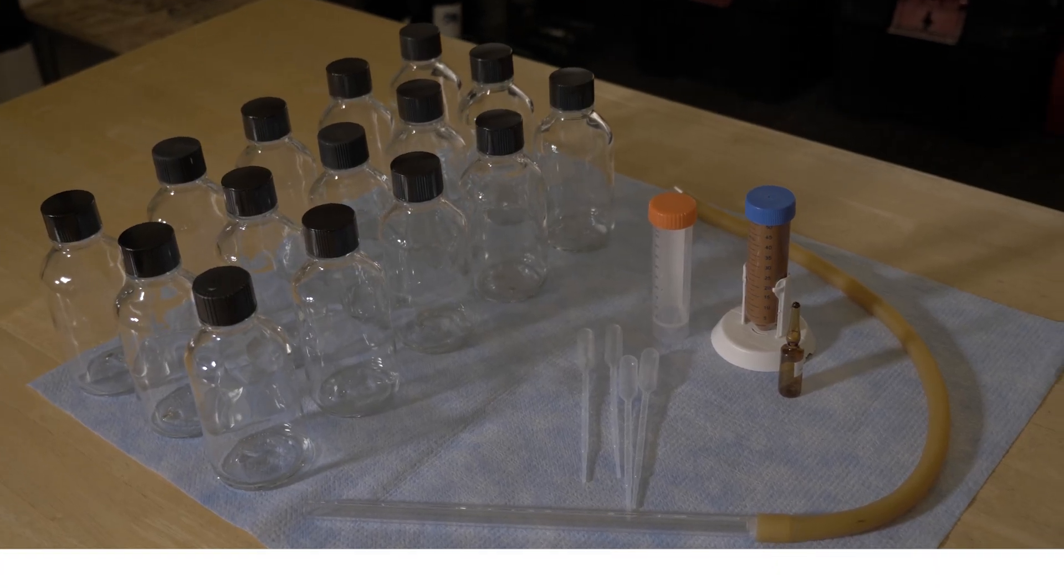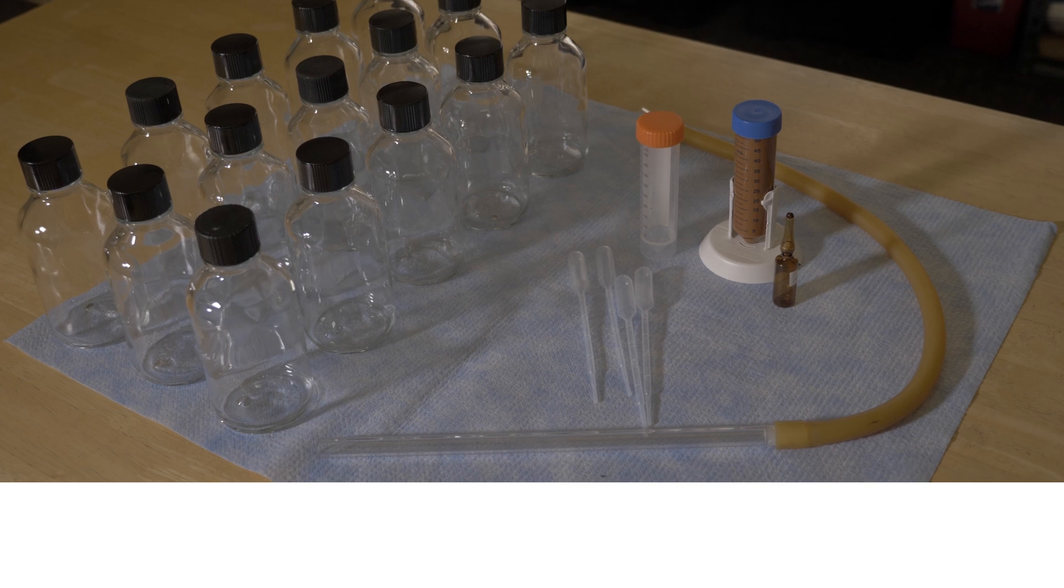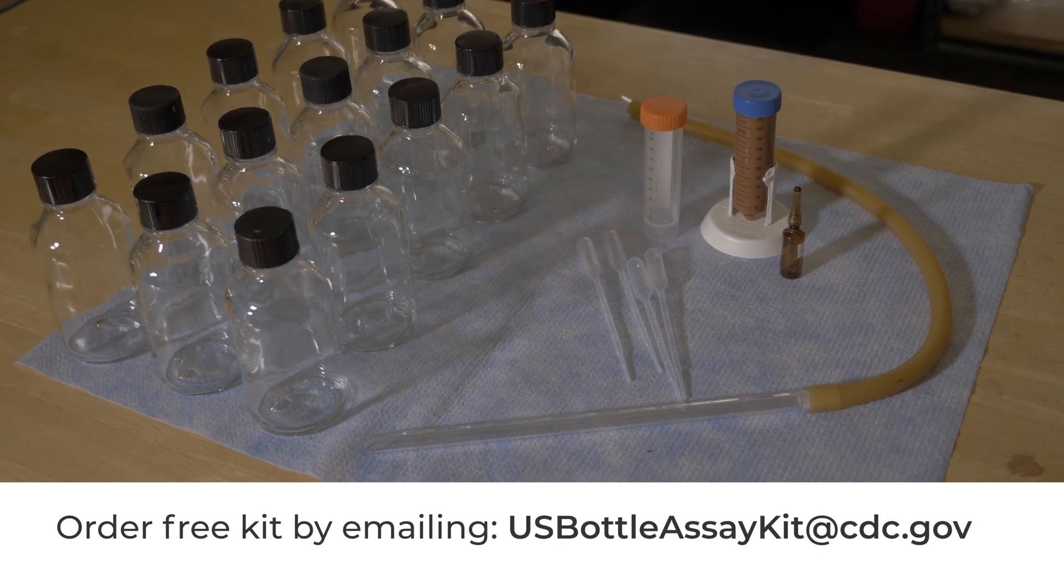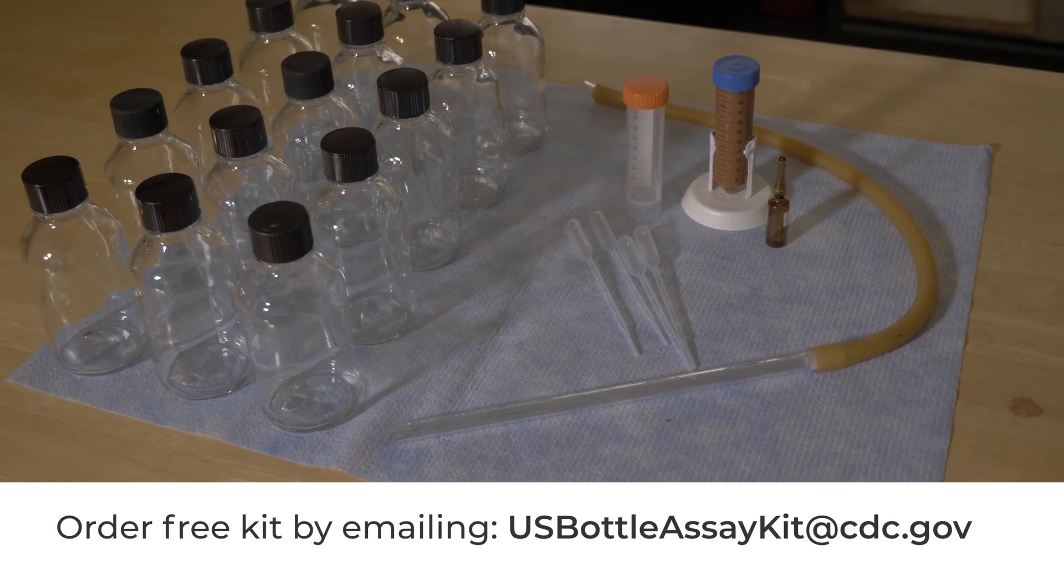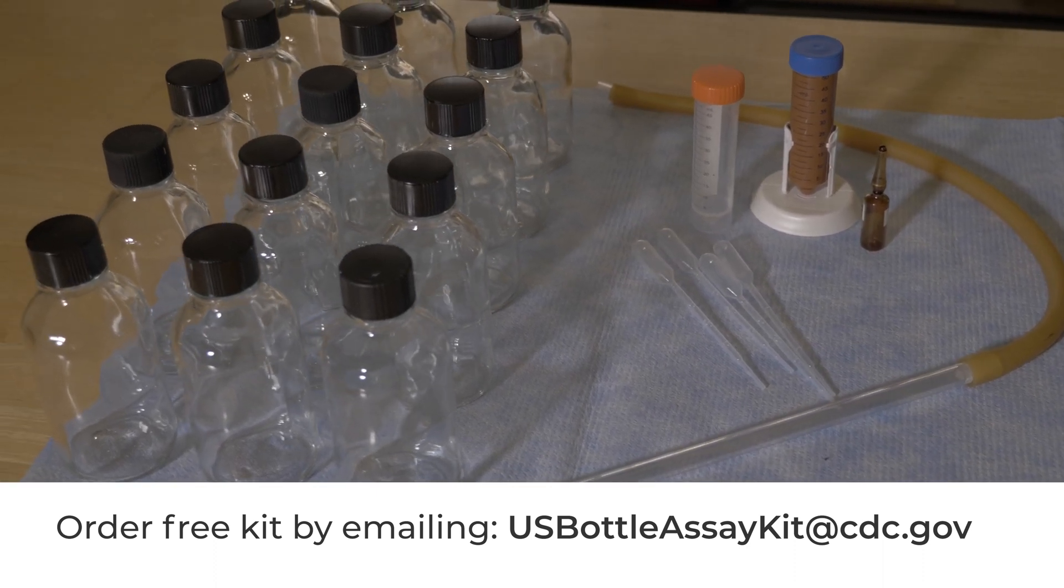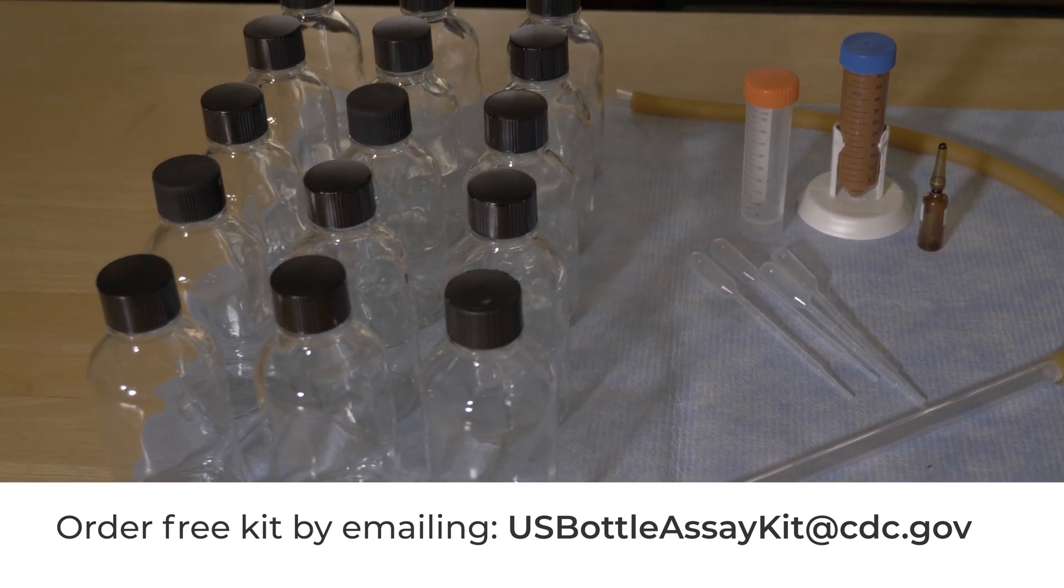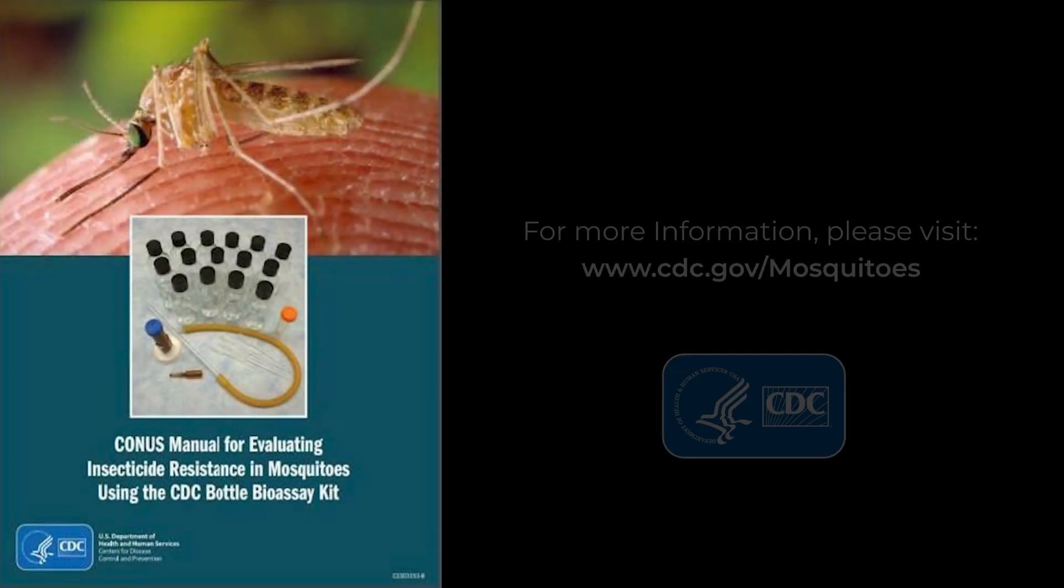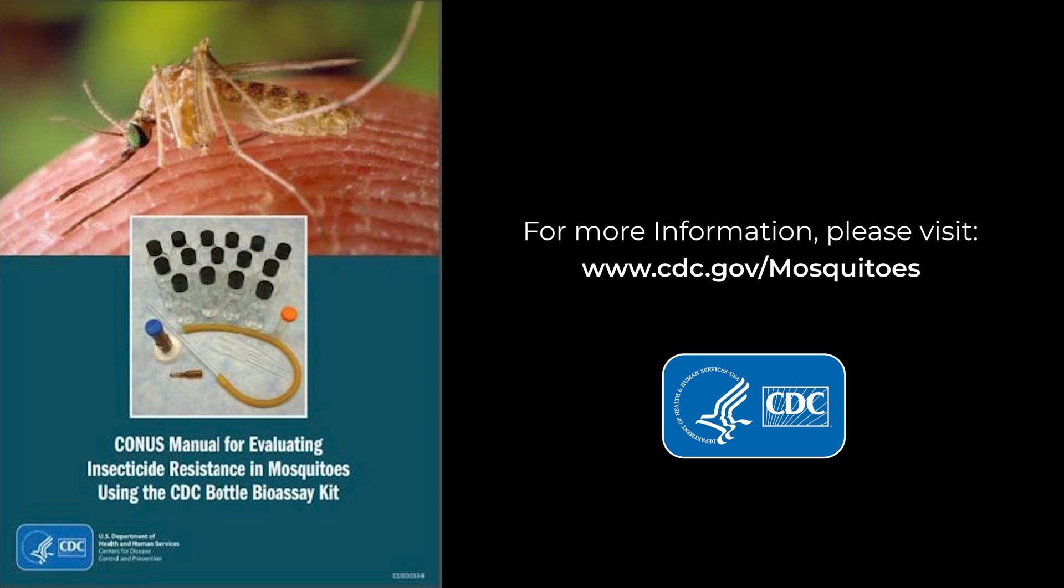Programs in the continental United States and its territories can order free insecticide resistance kits by sending an email to usbottleassaykit at cdc.gov and requesting an order form. Kits include bottles, insecticide, and manual. You can access the CDC bottle bioassay manual at any time by visiting www.cdc.gov forward slash excision.